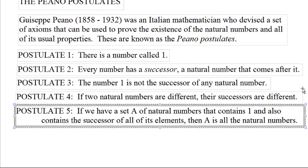And Postulate 5, slightly more complicated: if we have a set of natural numbers that contains 1, and contains the number that comes after each one of its elements, then that set is all the natural numbers. This is called the inductive axiom. It's a very powerful tool in mathematics. If you want to prove something, you can prove that it works for 1, and prove that every time it works for some number, it works for the number after it. That enables you to prove it for all the natural numbers — incredibly powerful, though way beyond the scope of this course.